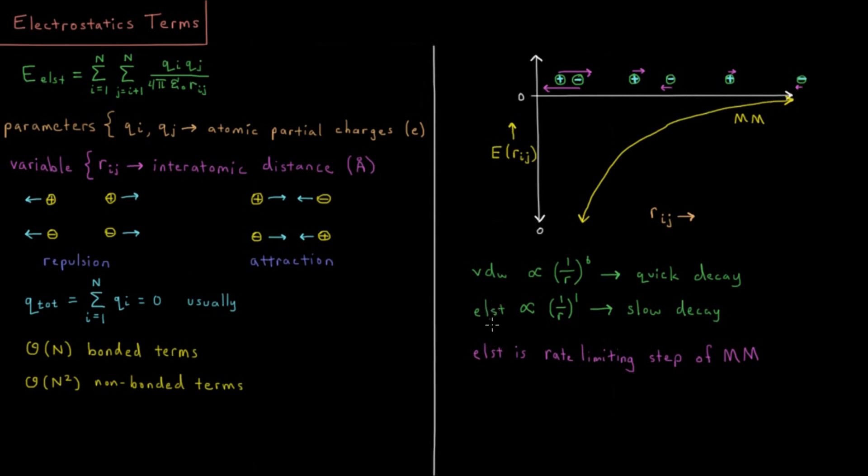Whereas the electrostatic term depends on 1 over r to the first power. So 1 over r, as you can see in the crudely drawn diagram here, is a very slowly decaying function. We can't use any of the types of tricks that we might think about using for van der Waals, like cutting them off after a certain radius or things like that.